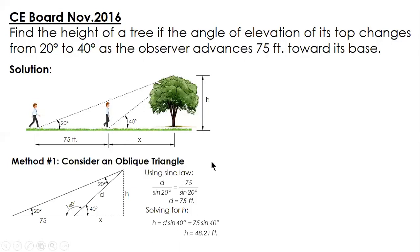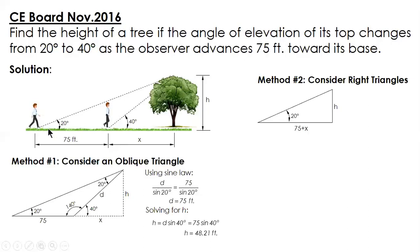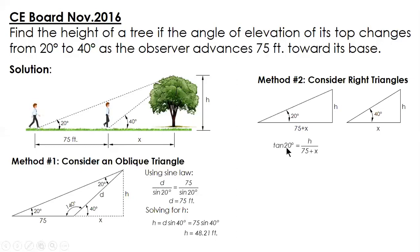The second method is to consider right triangles. Looking at the figure, we draw the first triangle with the 20-degree angle and adjacent side of 75 plus x, with opposite side H. The other triangle has the 40-degree angle. Since we are given two legs, we will use tangent. Tangent of 20 equals opposite over adjacent. For the other triangle, tangent of 40 equals H over x.